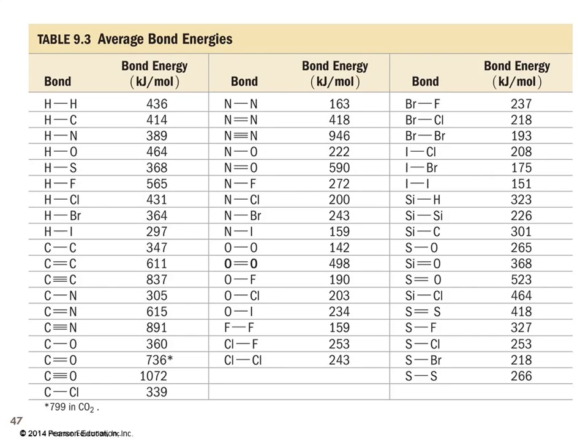So there are tables. This is one table. I think there's more in the back of the book, and the CRC has pages and pages of average bond energies. And of course, you could look these up on the Internet too. So the average energy of a hydrogen-hydrogen bond is 436 kilojoules. A carbon-carbon triple bond is 837. These are all kilojoules per mole of bonds.